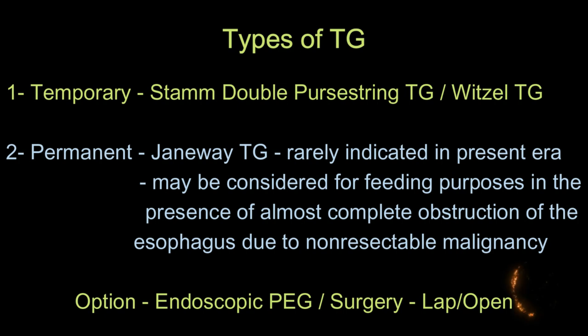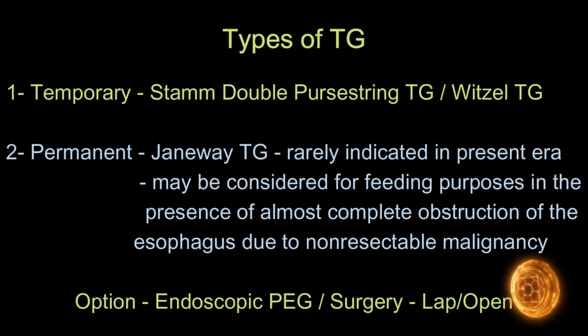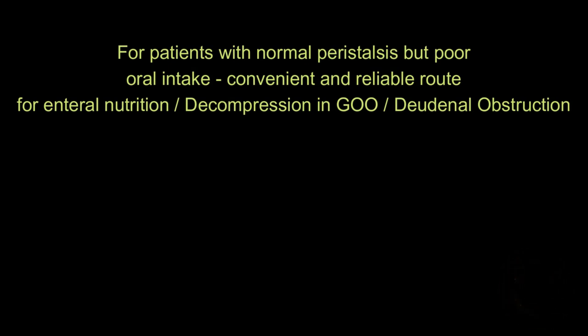The permanent type is rarely indicated in the present era, and may be considered for feeding purposes in the presence of almost complete obstruction of the esophagus due to non-resectable malignancy. Options for tube gastrostomy are endoscopic, that is PEG, or surgery that can be laparoscopic or open. We are discussing open tube gastrostomy in a patient with duodenal adenocarcinoma and complete obstruction.